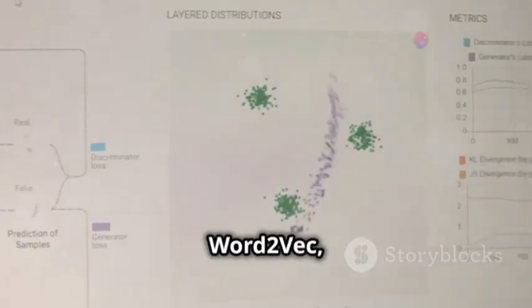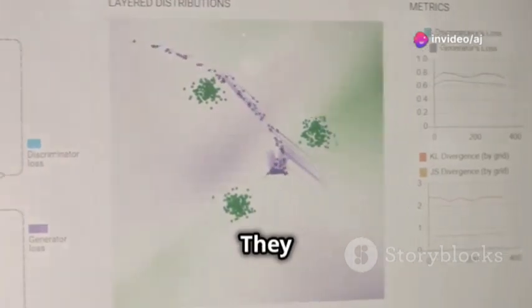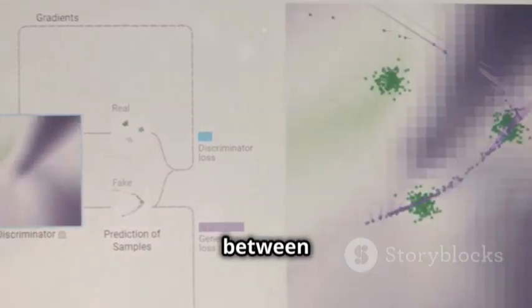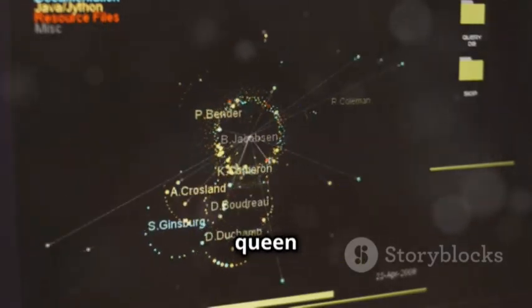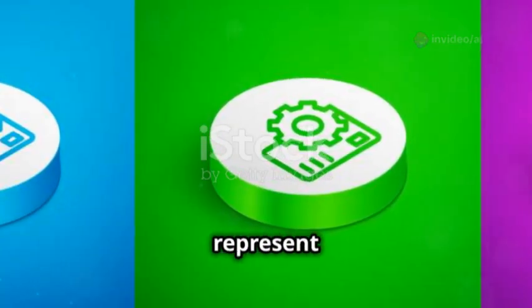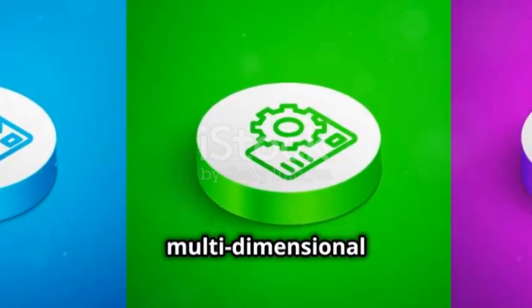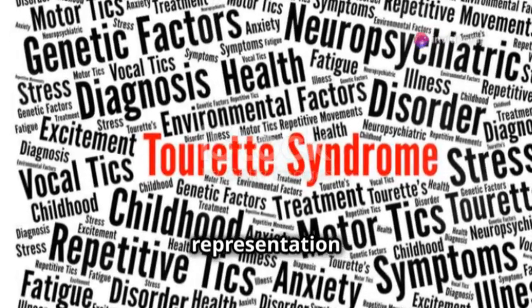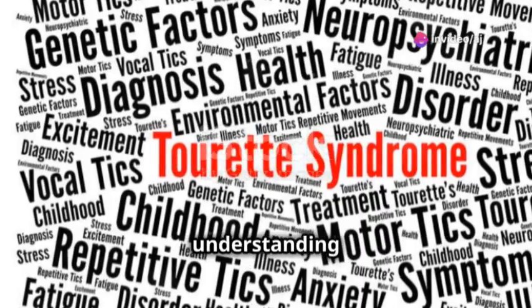More advanced language models like Word2Vec, GloVe and FastText go beyond simple word counts. They delve into the deeper aspects of language, capturing the semantic relationships between words. These models understand that words like King and Queen are related, even if they don't appear together in a sentence. They can grasp the context and meaning behind words. These models represent words as vectors in a multidimensional space, where similar words cluster together, allowing for a more nuanced understanding of language.